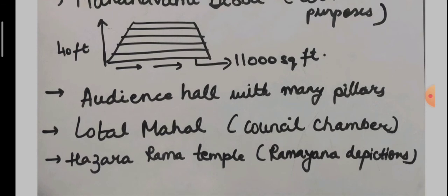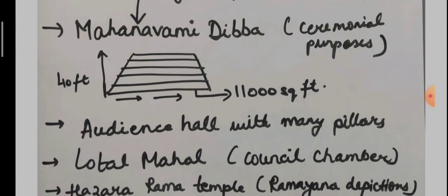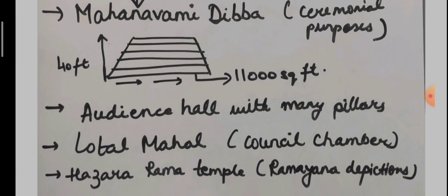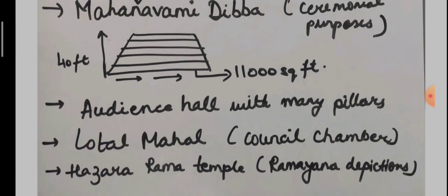But was Mahanavami Dibba that stands today the center of elaborate ritual? It is actually confusing because the area around Mahanavami Dibba that has been found, according to some scholars, is too small for such a large function to be organized at that time. Therefore, there is certain confusion regarding for what purpose actually the Mahanavami Dibba was particularly used.